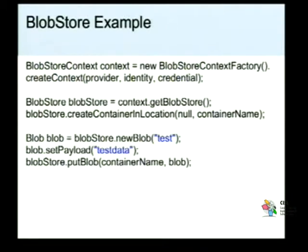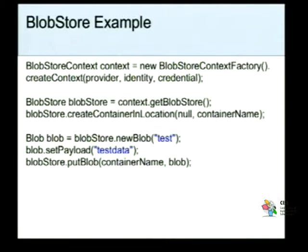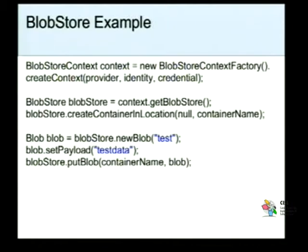Uma vez criado o container, você vai chamar no BlobStore um newBlob, passando o nome do arquivo que você vai criar lá dentro, a chave de informação. Isso vai para a abstração chamada blob. Depois você configura o payload, que é o conteúdo dessa carga que você está dando lá no servidor. No caso vai ser apenas a string testData. E por fim, você diz putBlob e passa o nome do container e o blob. Dentro do nosso container br.teste, vai ser inserido esse par chave-valor testData.